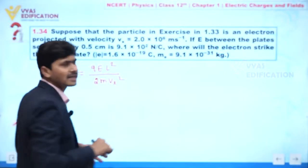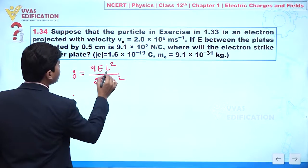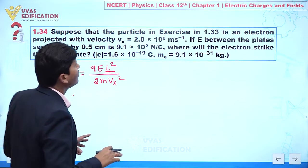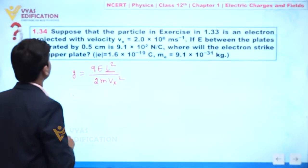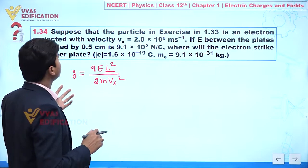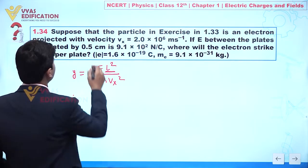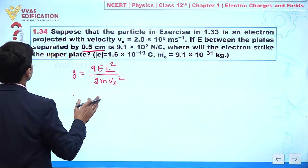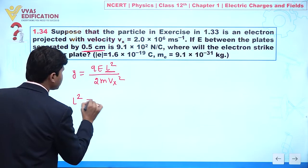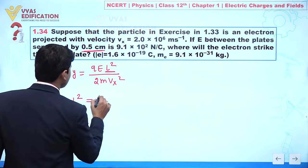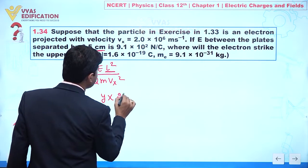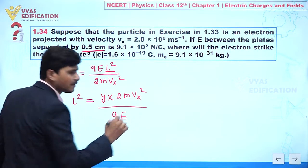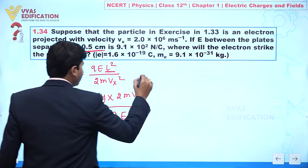In this question, q is the charge of an electron. Our objective is to calculate where the electron will strike the upper plate. E between the parallel plates is given, and the plate separation gives us y. So our objective is to calculate l. Rearranging: l² = (y × 2mvx²) / (qE).